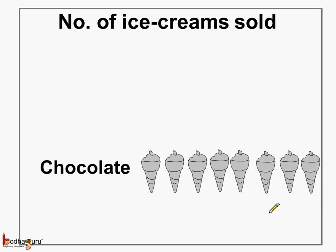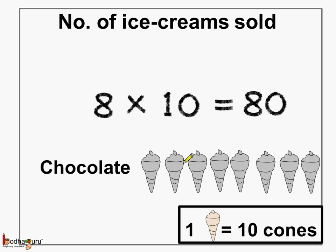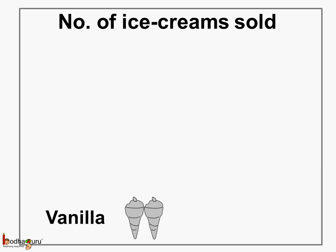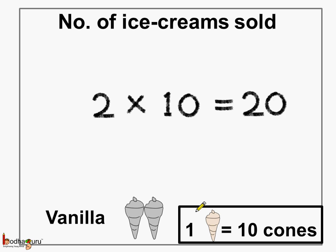Next, let us see what about chocolate ice cream. 1, 2, 3, 4, 5, 6, 7, 8 — eight cones are there, and we know one cone represents 10 ice creams. So 8 multiplied by 10 is equal to 80 — so 80 chocolate ice creams were sold that day. Now coming to vanilla ice creams: 1, 2 — two ice cream cones are there. So 2 multiplied by 10 is equal to 20, meaning 20 vanilla ice creams were sold that day.